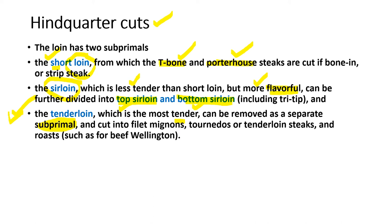The tenderloin can be further cut into filet mignon, tournedos, or tenderloin steak. Beef Wellington is a product in which the tenderloin is kept whole, wrapped in goose liver or mushroom, then wrapped in puff pastry and baked.